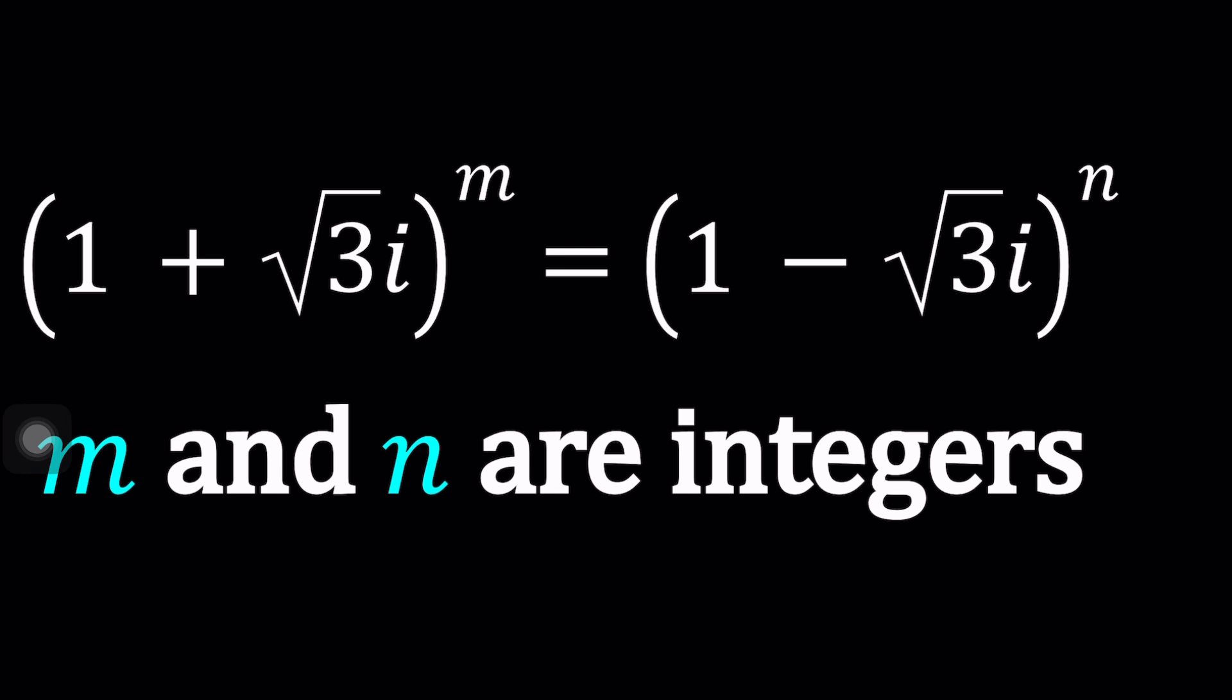We have (1 + √3i)^m = (1 - √3i)^n and we're going to be solving for m and n values. m and n are integers so we're going to be looking at integer solutions.